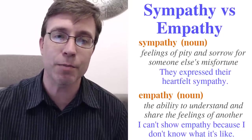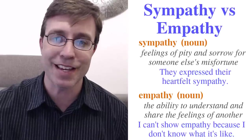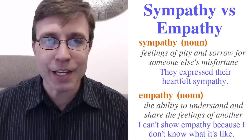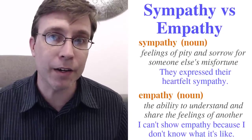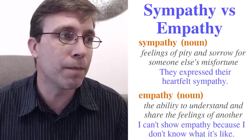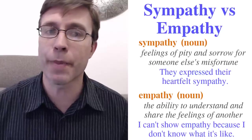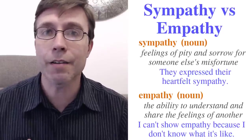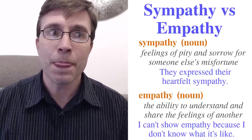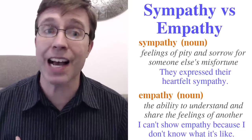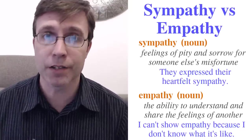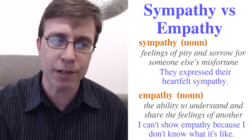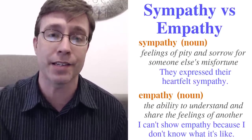You can also use these as verbs — to sympathize with someone or to empathize with someone. The big difference is: if you don't know what it's like, you can't express empathy. For example, if somebody lost their pet, I can feel sympathy for that person, but I can't feel empathy because I've never lost a pet. Sympathy is sorrow; empathy is when you've had that same experience.